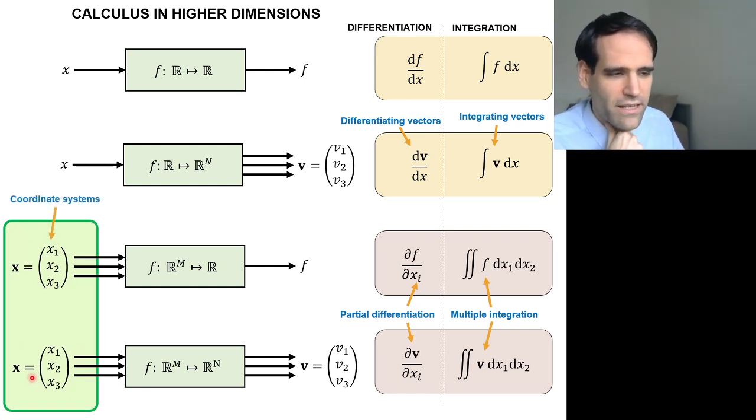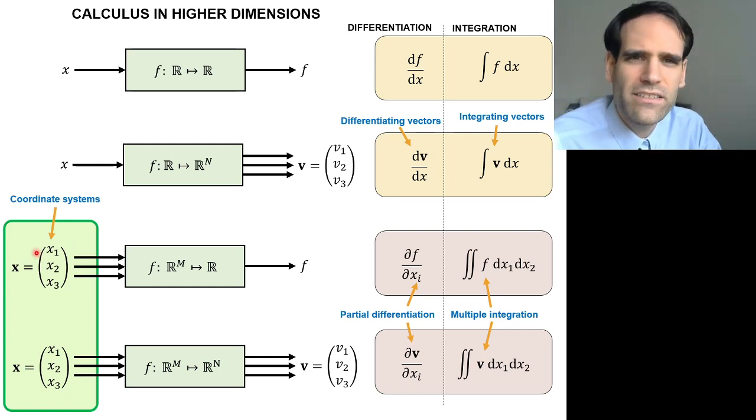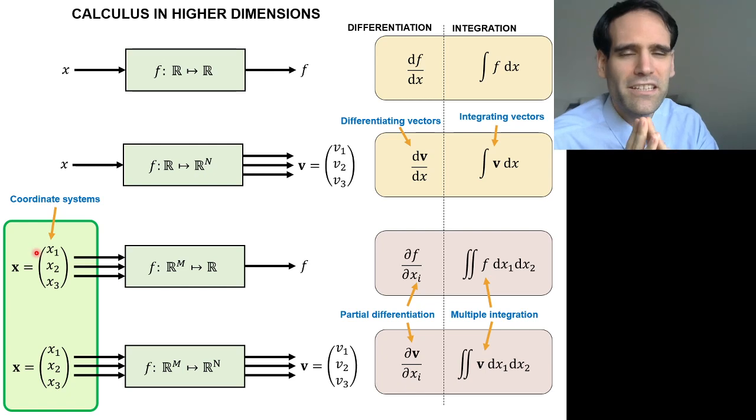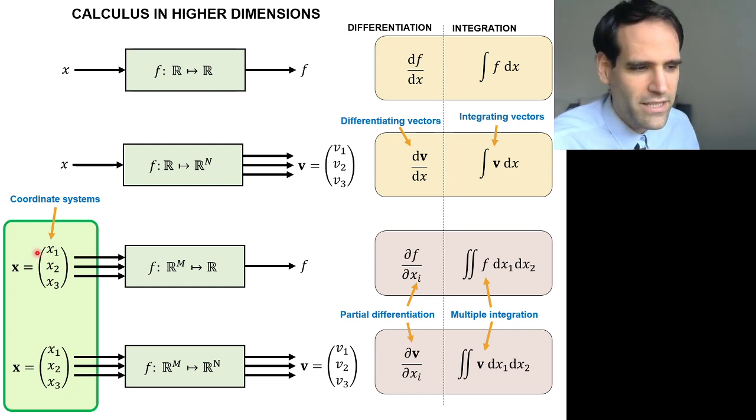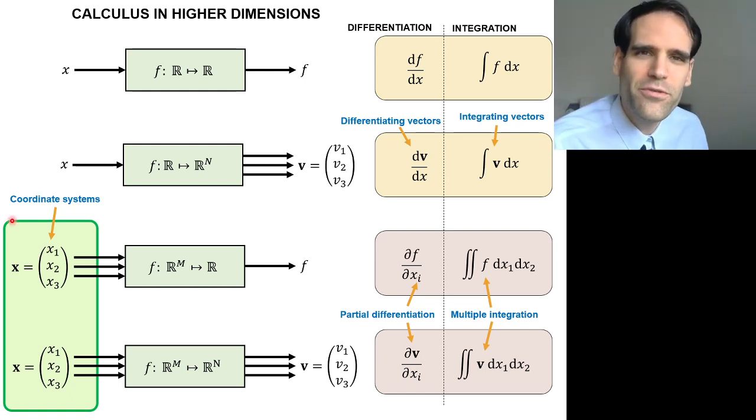Why? Because the position vector can not only be given - it's always three numbers to describe the position, but those three numbers might be something different from x, y, and z, which is what you are used to. These three numbers might be other sets of three numbers, which are also used to describe the position.